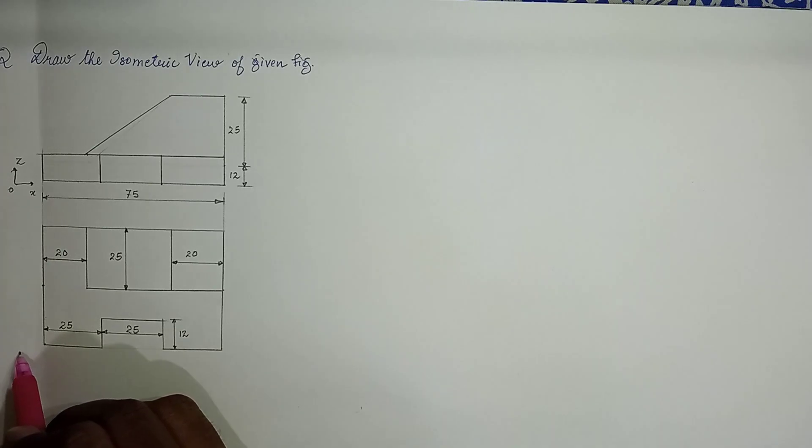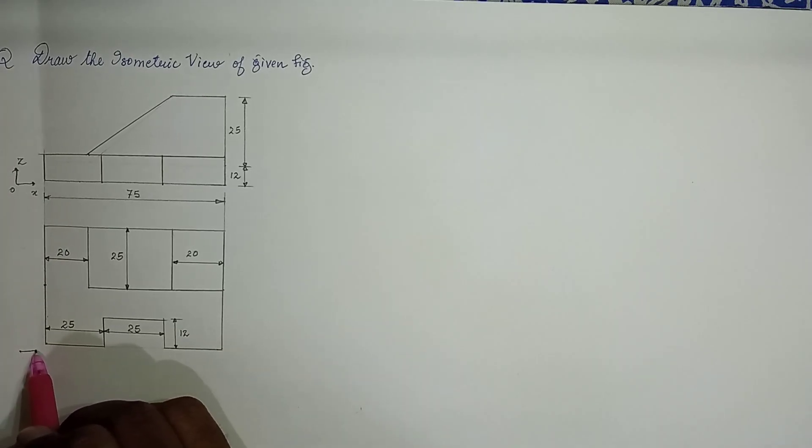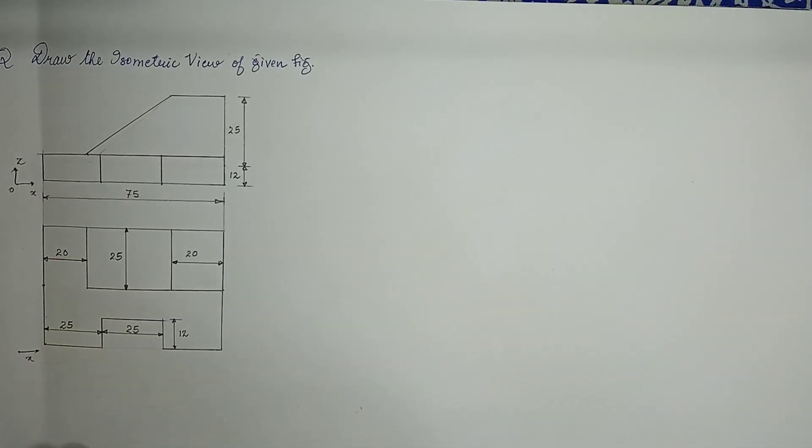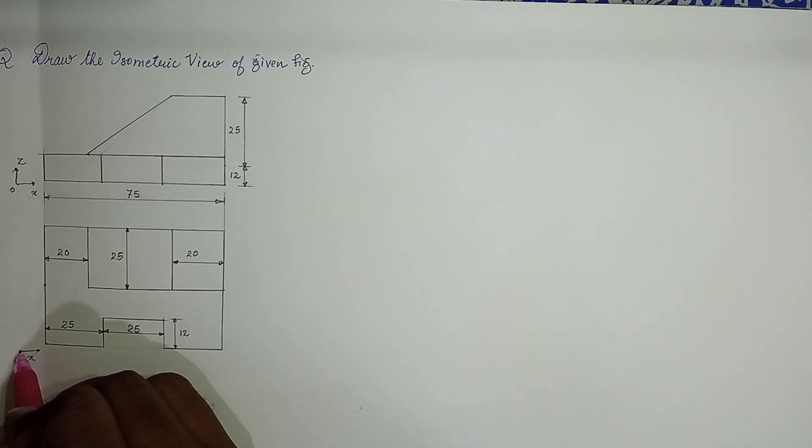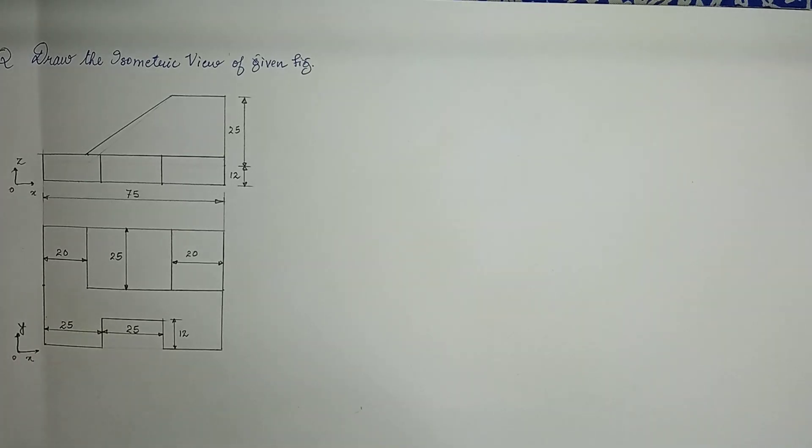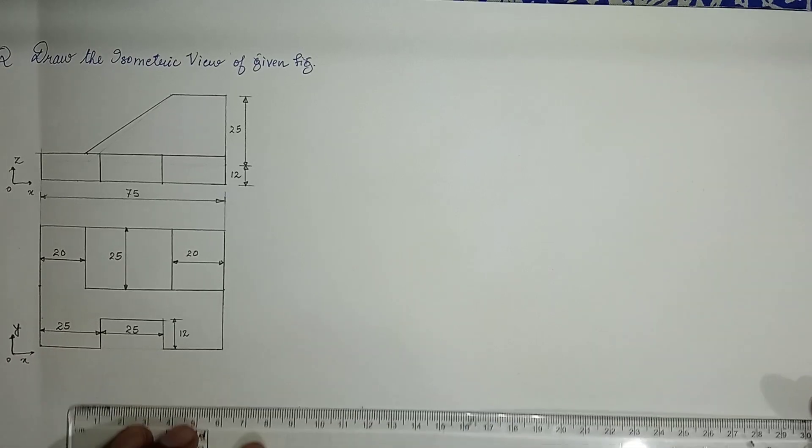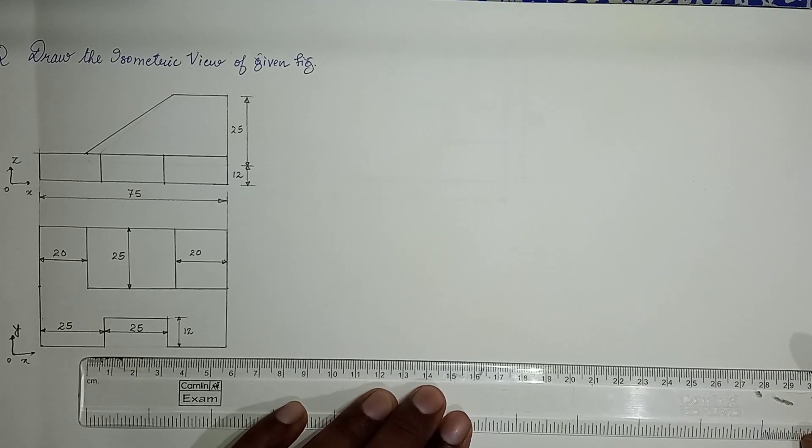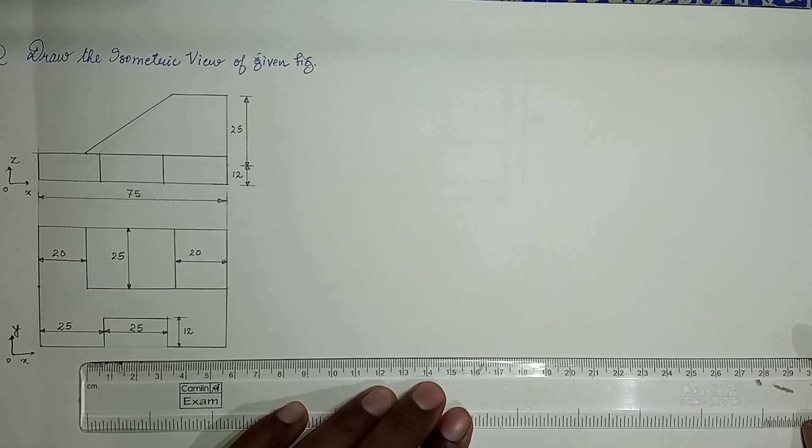Similarly, I have an origin of the top view over here. Again, x in the front and x in the top view is common. Now the plane has changed, it has become x-y plane with this origin. Let us take this corner as the corner of the ground or the corner of origin.